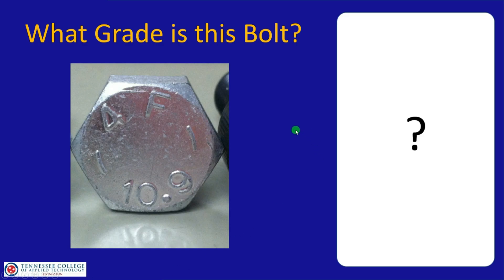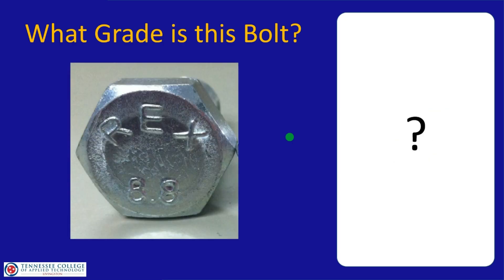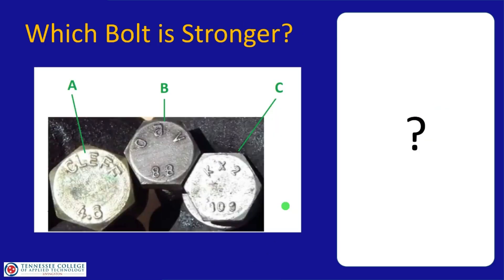Identifying a metric bolt's grade is easy — it's stamped right on it. A bolt stamped 10.9 is grade 10.9; a bolt stamped 8.8 is grade 8.8, which tells you its strength. Given three bolts — a 4.6, an 8.8, and a 10.9 — the strongest is C, the 10.9, since higher numbers mean stronger bolts.